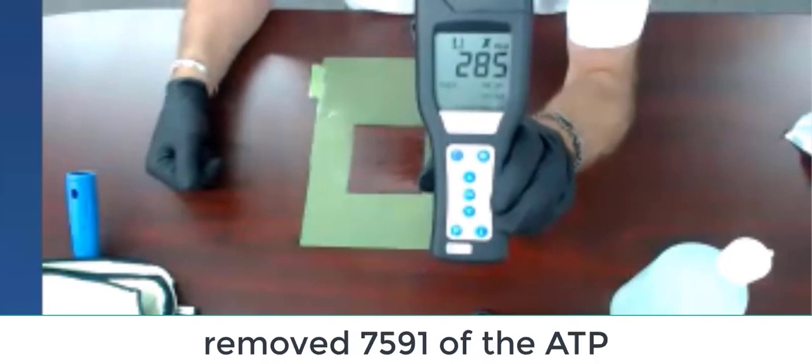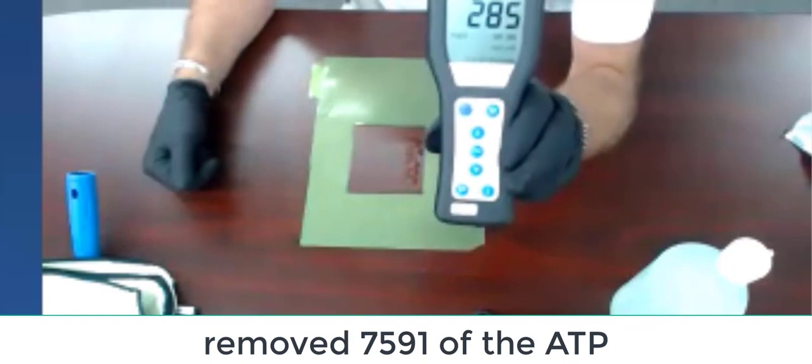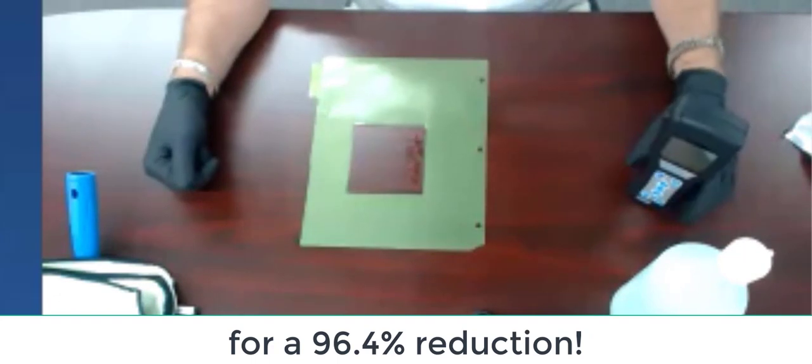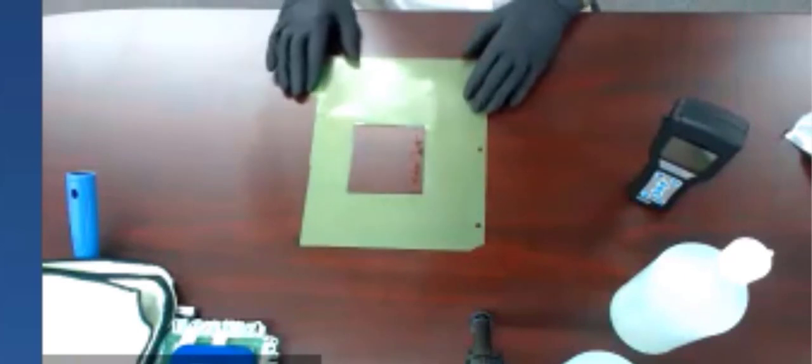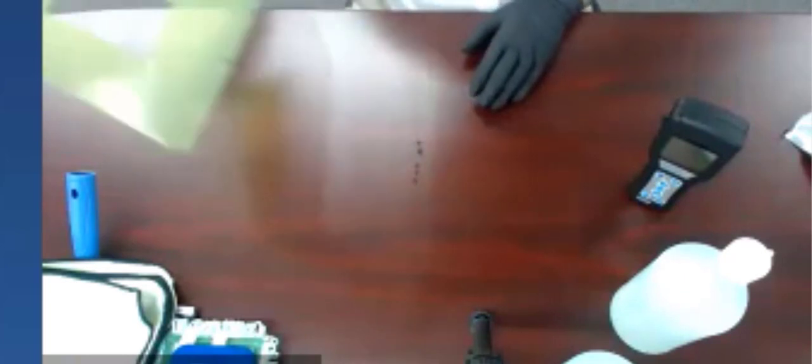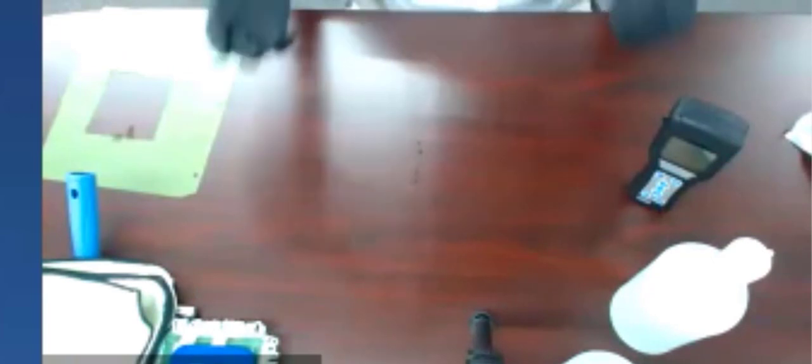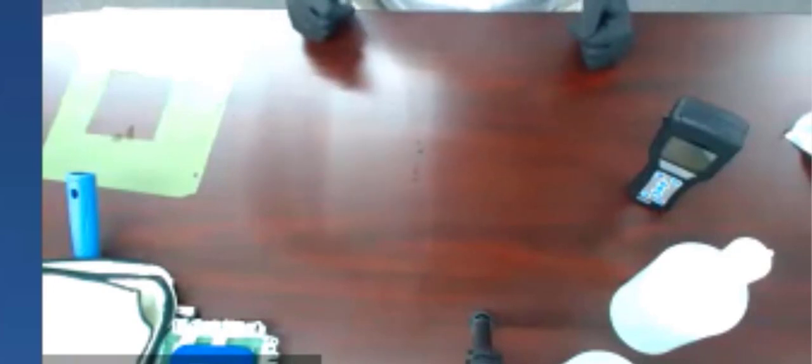285. Would somebody do the math while I'm doing the next step and tell me how much our percentage of reduction was? I mean, I can tell you from 27000 down to less than 300. What would have happened if I would have used a disinfectant on that? Would the disinfectant have killed anything? Nothing because there's still that soil on there. Thousands of microbial life.